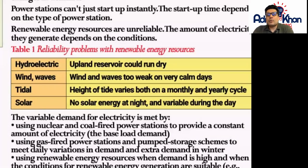Wind and wave power. Wind and waves are sometimes too weak on very calm days. If there's not much wind, then the waves will be quite weak. And at the same time, generally speaking, the turbines, the wind turbines will not move as much. Tidal height of tide varies both on a monthly and a yearly cycle, so sometimes it's unreliable.